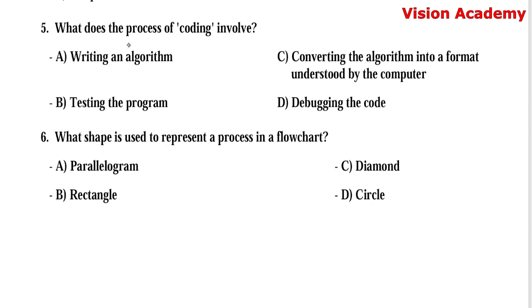Question number 5: What does the process of coding involve? Option A, writing an algorithm. Option B, testing the program. Option C, converting the algorithm into a format understood by the computer. Option D, debugging the code. Here, option C, converting the algorithm into a format understood by the computer, is the right answer.